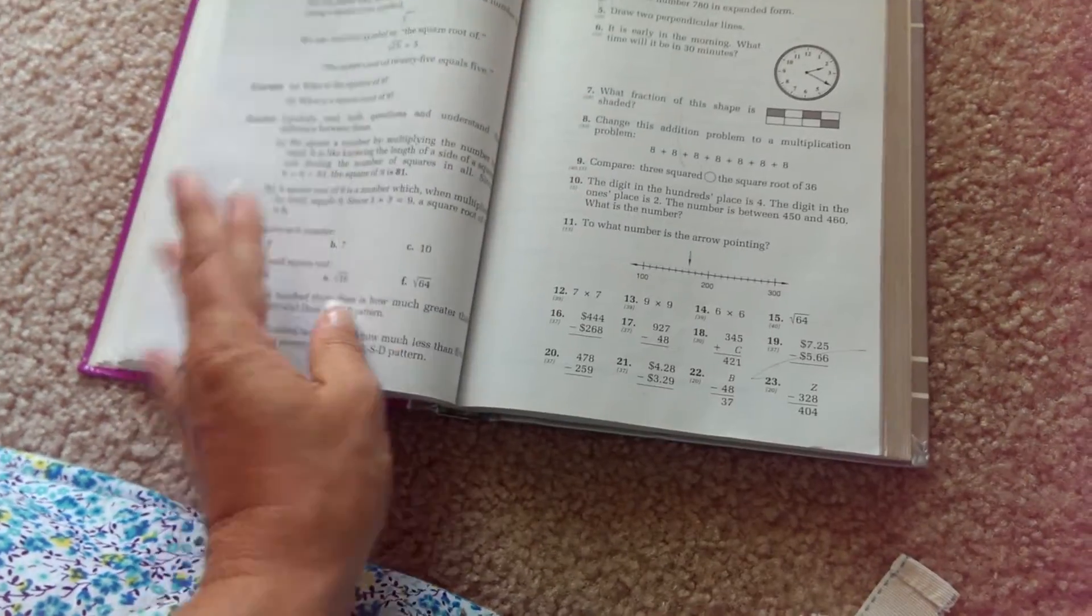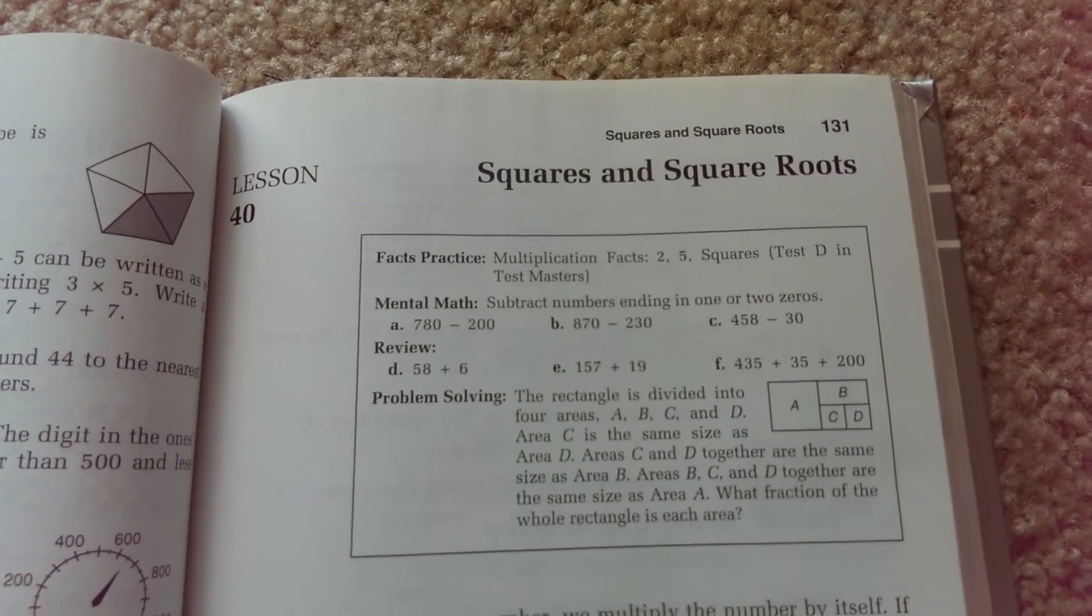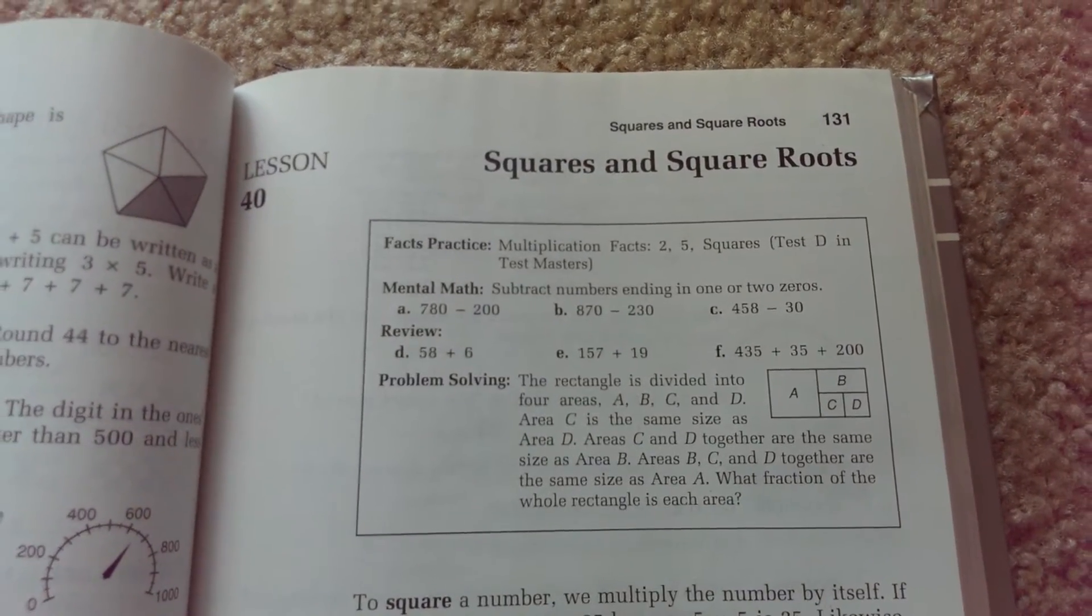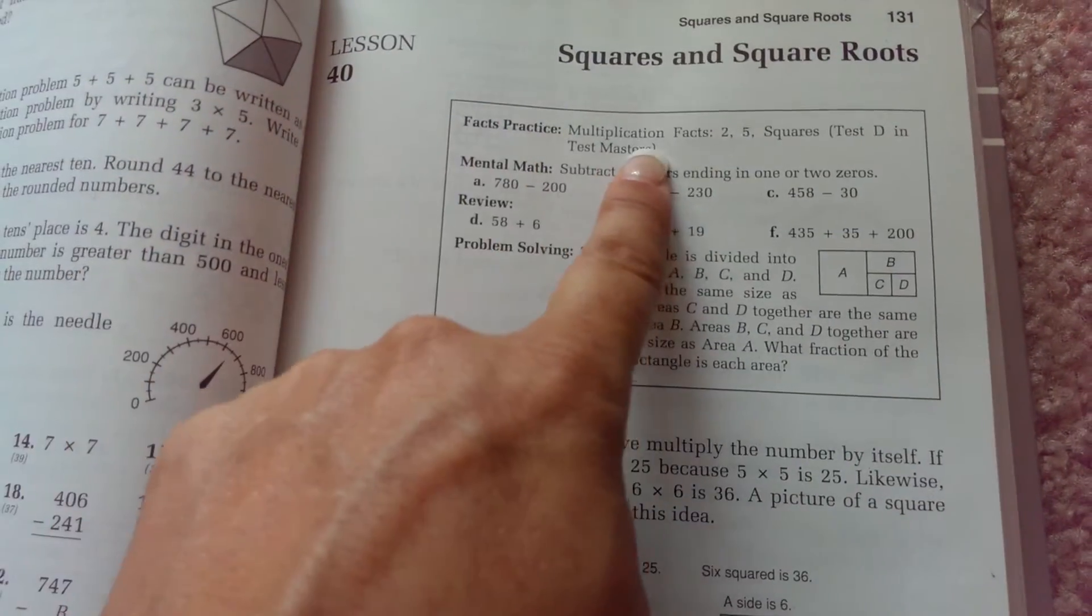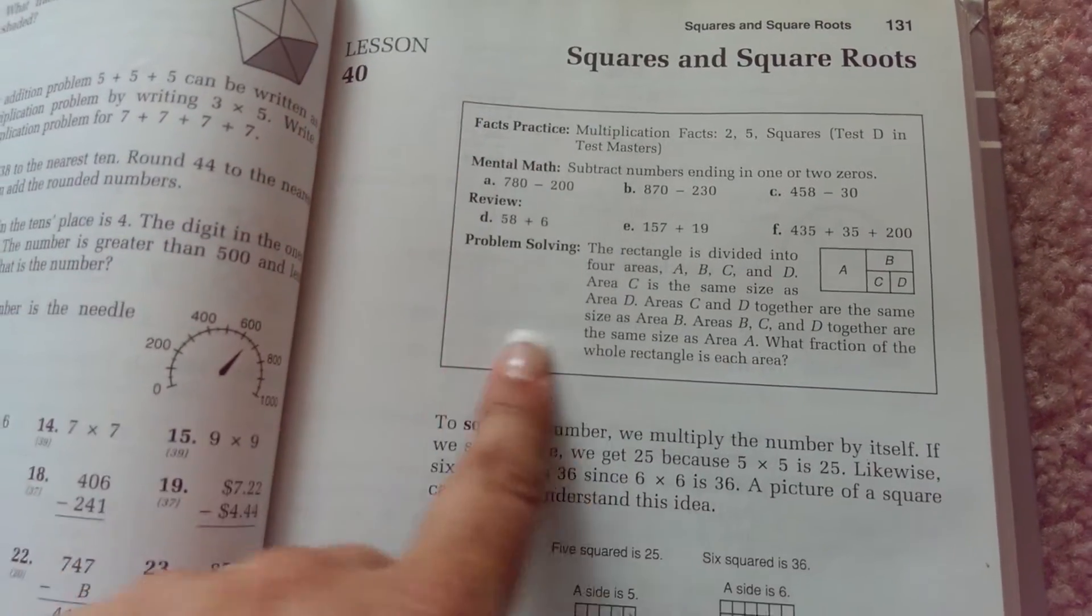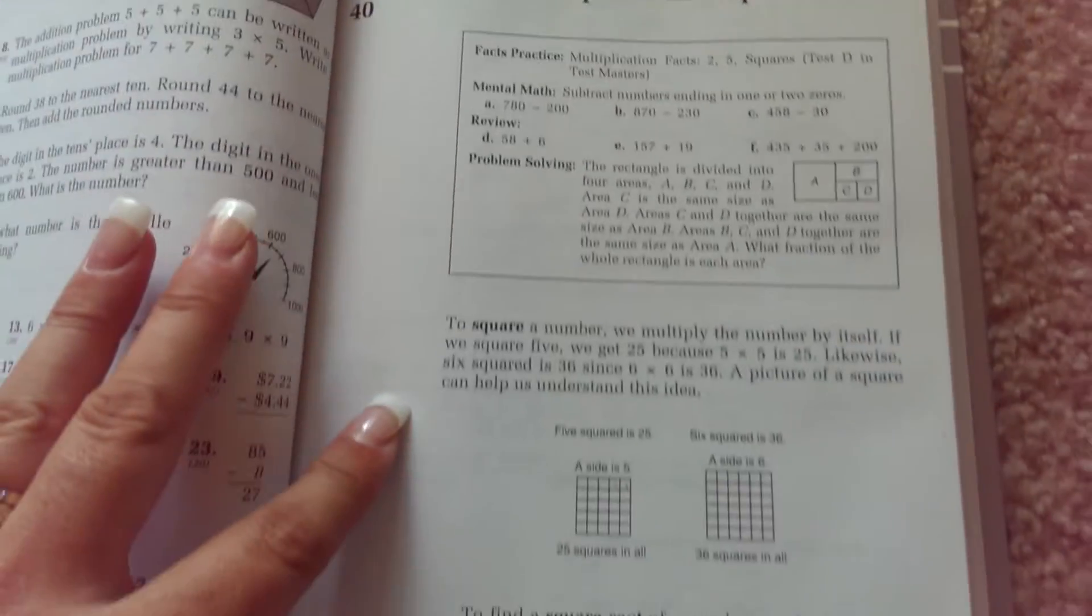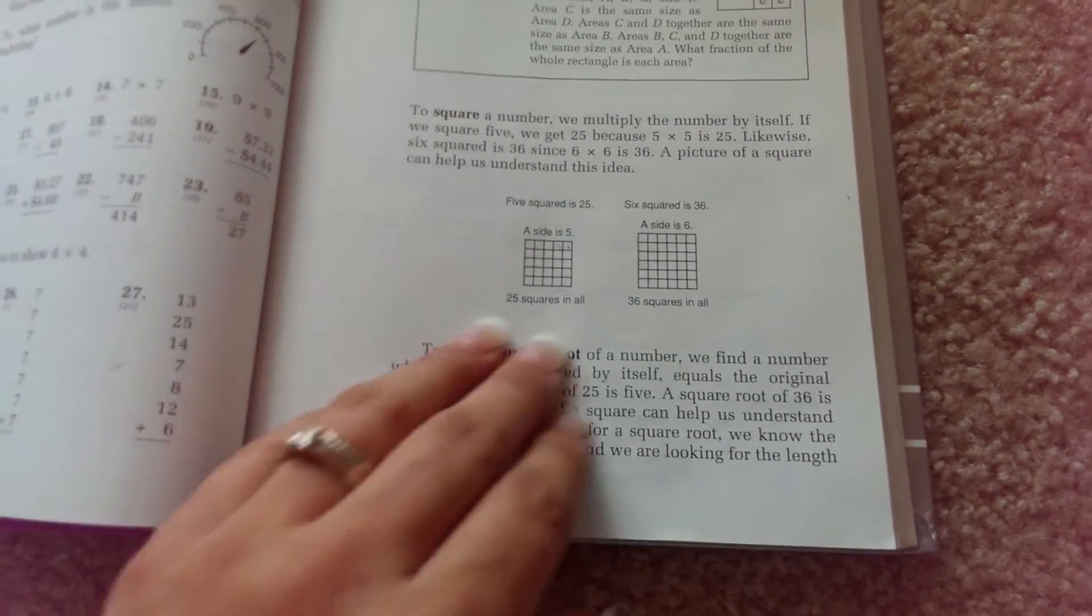If we go to lesson 40, page 131. Lesson 40 is squares and square roots. And so again, it's got the, I don't know what you call this box, and it introduces it. It doesn't say anything about having to use a calculator.